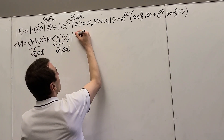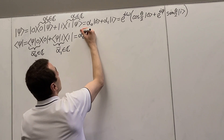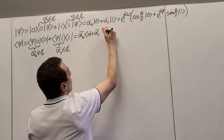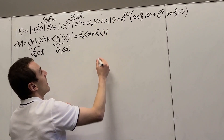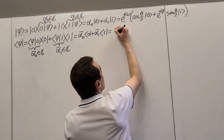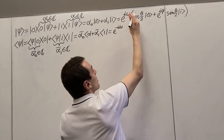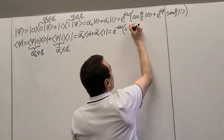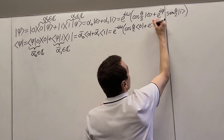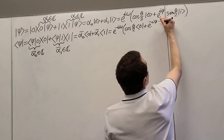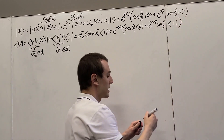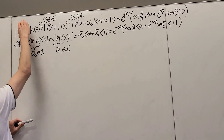So that gives us, more succinctly: alpha zero bar times the zero bra plus alpha one bar times the one bra. Now let's write the bra version in the parameterized form in terms of angles. The global phase factor gets a minus sign because we take the complex conjugate. Cosine of theta over two remains unchanged but the ket turns into a bra. Then we have e to the minus i phi, then sine of theta over two, and that ket also turns into a bra. So now we have both the ket and bra versions.